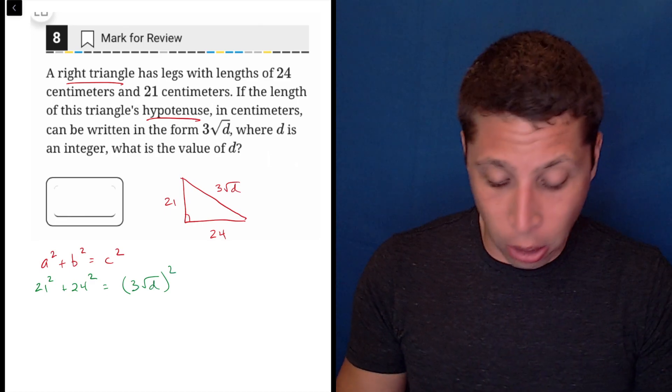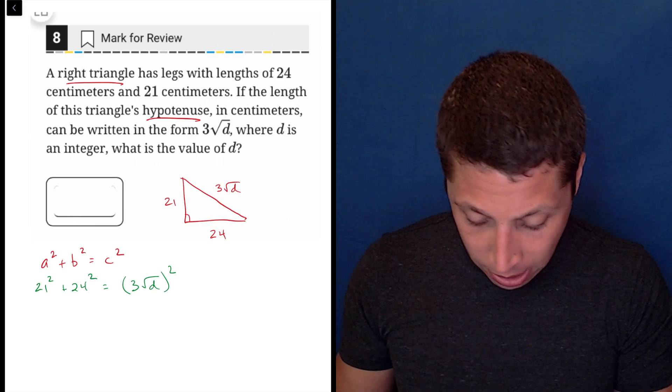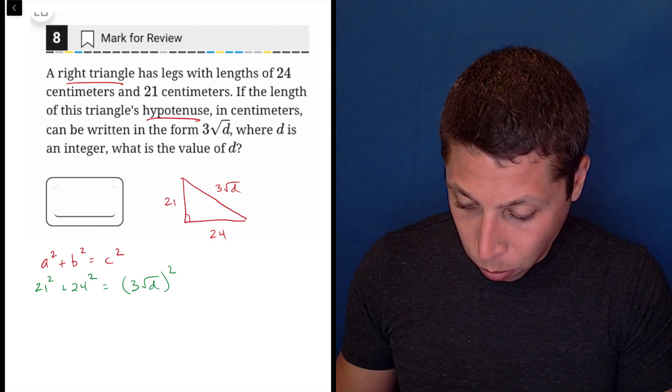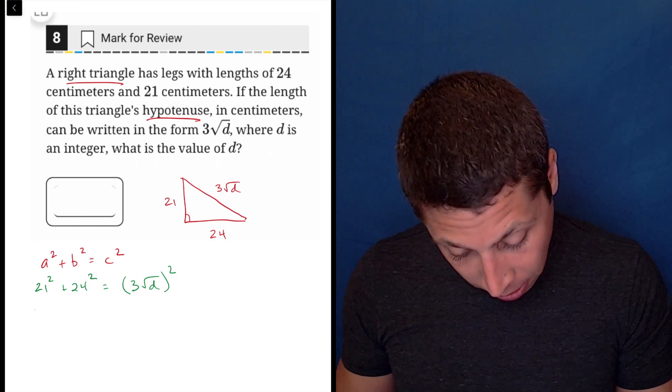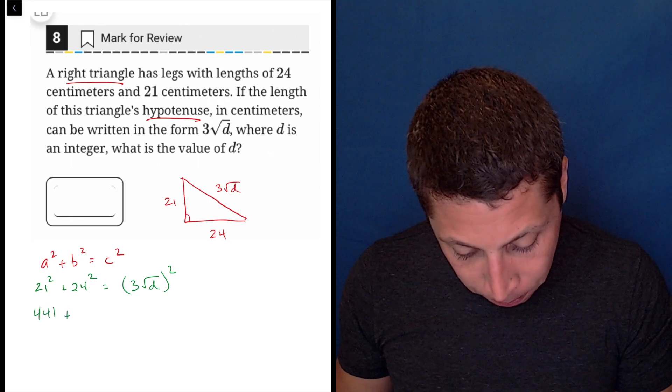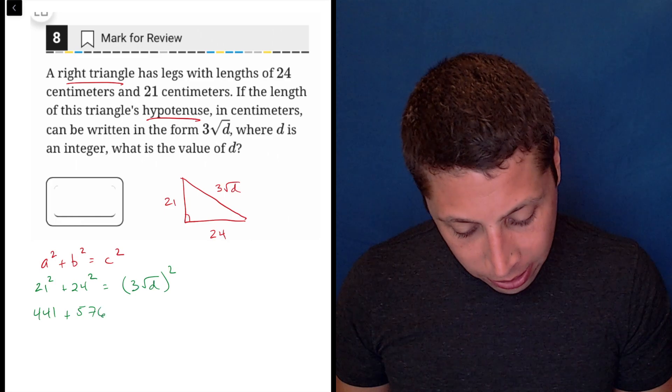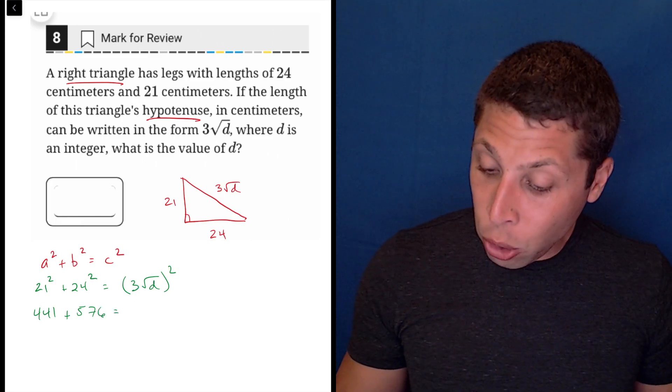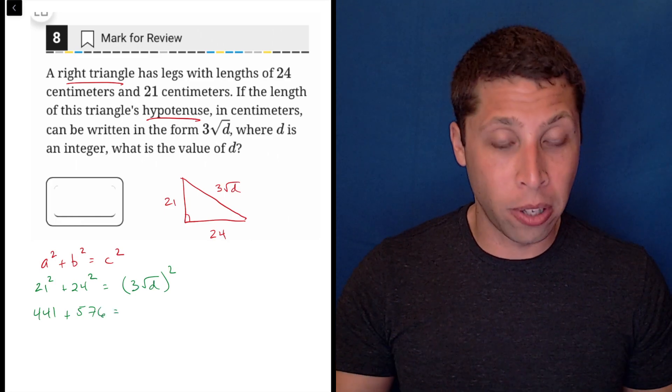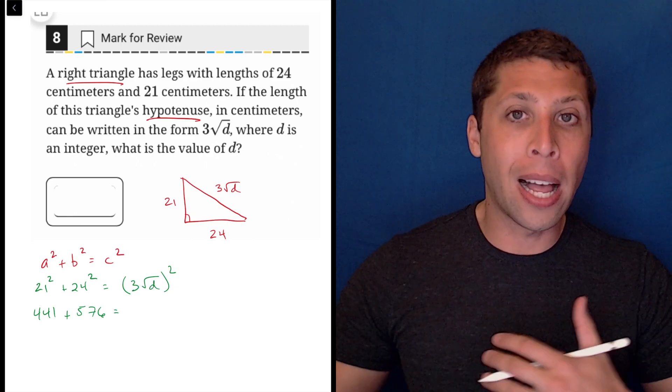Now the calculator is going to take over. Let's just find what is the 21 squared, 21 times 21 is 441, 24 squared is 576, and hopefully you know how to deal with this situation. The square is going to apply to both pieces.